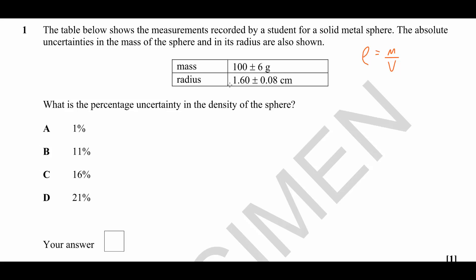Well, we know the mass, we know the radius. How do we get the volume from the radius? You can refer to your formula sheet and you'll know that V equals 4 over 3 π r cubed.